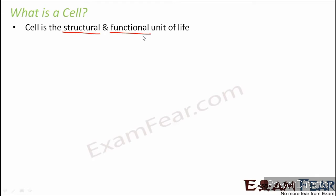A cell is the structural and functional unit of life. When I say structural unit, it means the structure of a living organism is basically made up of cells — many cells together constitute the structure of a human being, a plant, or any other organism. When I say functional unit, I mean all the functions performed by a living organism — for example, digestion, excretion, respiration, and circulation — all these are ultimately performed at the level of the cell. So cells are the structural as well as functional unit of every living organism.